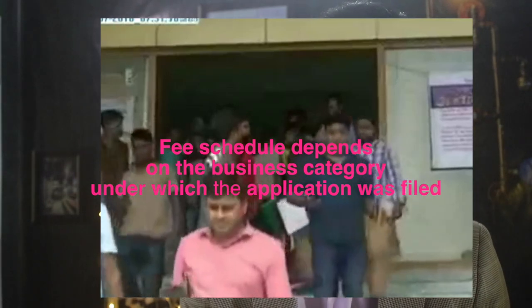Step number five: pay the determined fee and collect the trade license. After the ALS concludes the inspection and verification of your information and ownership, you will be asked to pay the required predetermined fee and collect your trade license. The fee schedule depends on the business category under which the application was filed. The final step is the signboard fee — when collecting the trade license, a signboard fee must also be paid. For all types of business, the signboard fee is 30% of the exact fee of the trade license.